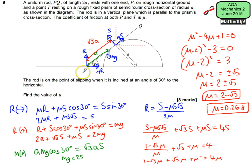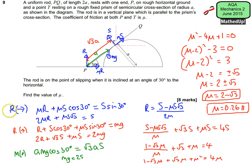So μ = 0.268 is the coefficient of friction both on the floor and on the cylinder. I hope you found that useful — thank you for joining me and I'll see you next time.